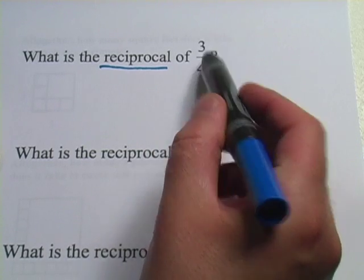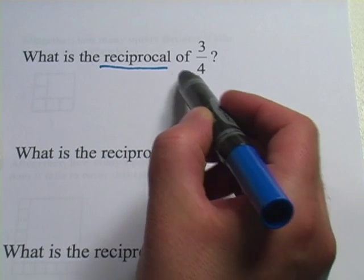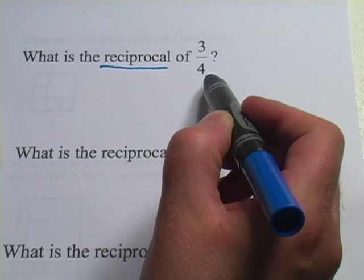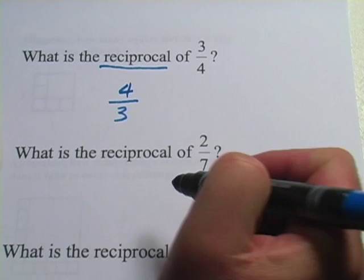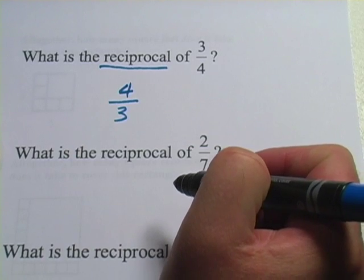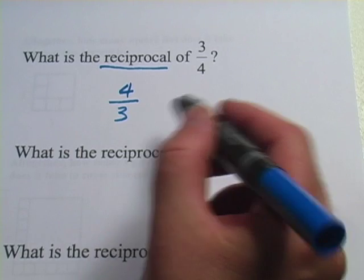So I would find the reciprocal of 3 fourths by putting what's on the bottom on the top and what's on the top on the bottom. So instead of 3 fourths, it's 4 over 3 or 4 thirds. It's as simple as that. That is the reciprocal of 3 fourths.